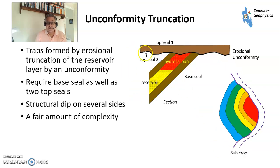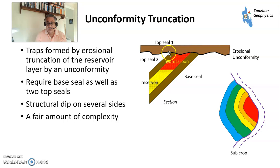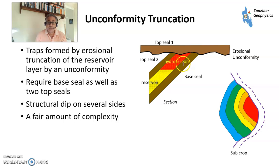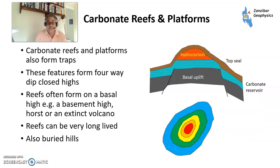Unconformity truncation is another type: you have an erosion unconformity with a top seal above it, then the reservoir, a hydrocarbon-aquifer contact, a second top seal, and a base seal. It's quite complicated, some things can go wrong, but it does work some of the time.